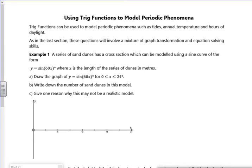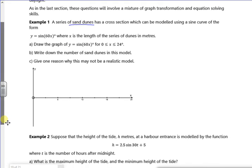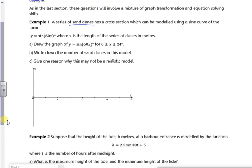Right. Keep going Gabe. Let's keep going. Right. So using trig functions to model periodic phenomena. Temperatures, stuff like that. So we've got a series of sand dunes. So we've got y equals sine 60x where x is the length of a sand dune. So we've got 0 to 24. So if you look, if you graph it. Let me pause it a second.